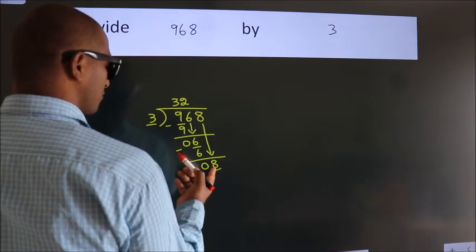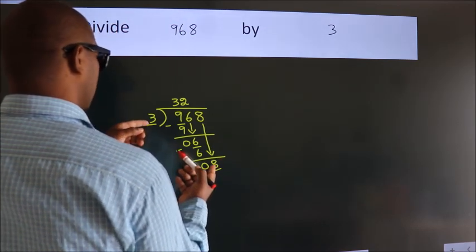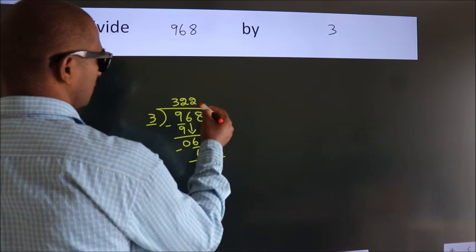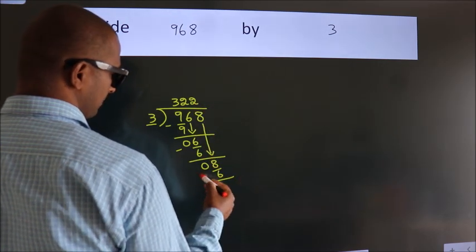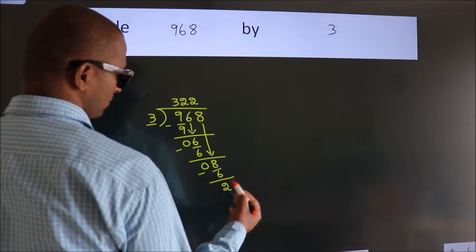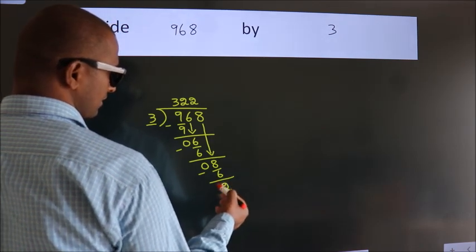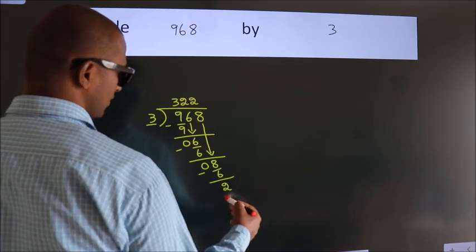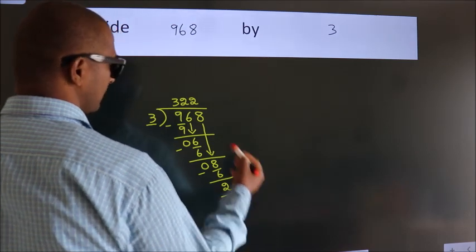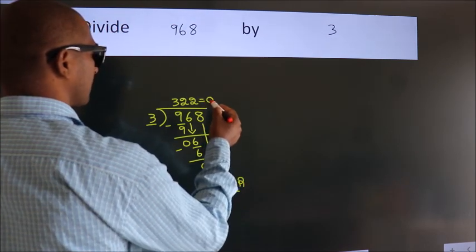A number close to 8 in the 3 table is 3 times 2, which is 6. Now we subtract. We get 2. After this, no more numbers to bring down, so we stop here. This is our remainder. This is our quotient.